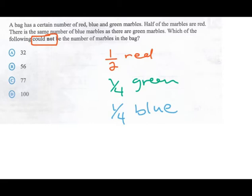Therefore that whole is divided into four parts because the red can be divided into two. We have four quarters. Therefore we want to find a number over here that is a multiple of four. Which one of these numbers can four go exactly into? Thirty-two is a multiple of four, fifty-six is a multiple of four, one hundred is a multiple of four. Seventy-seven is not a multiple of four, so our answer here would be C.